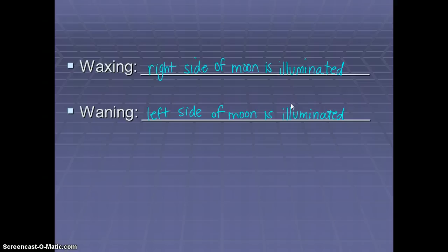The other terms you need to know that will help you remember the phases are waxing, which is when the right side of the Moon is illuminated, and waning, which is when the left side of the Moon is illuminated.